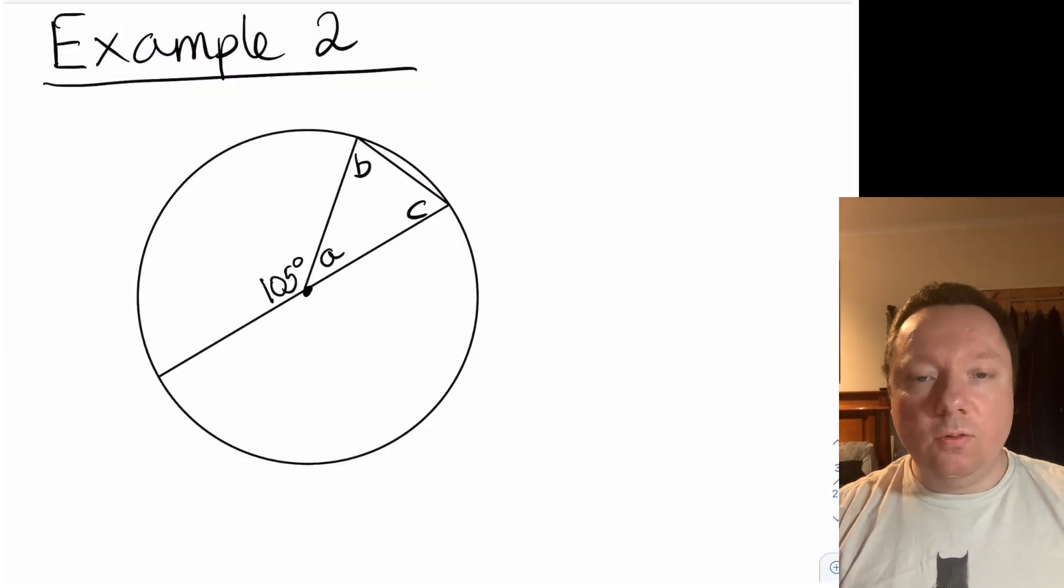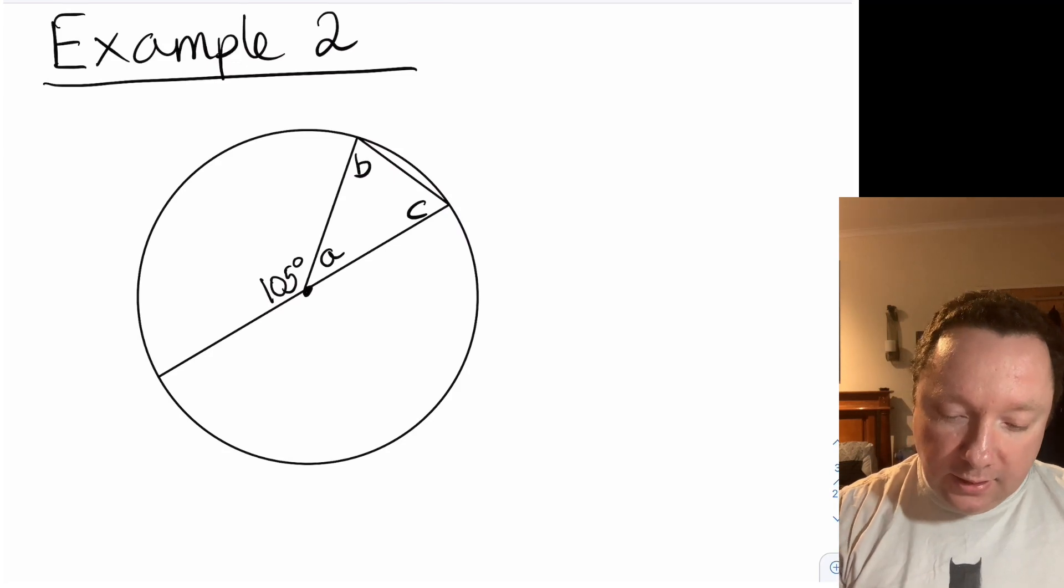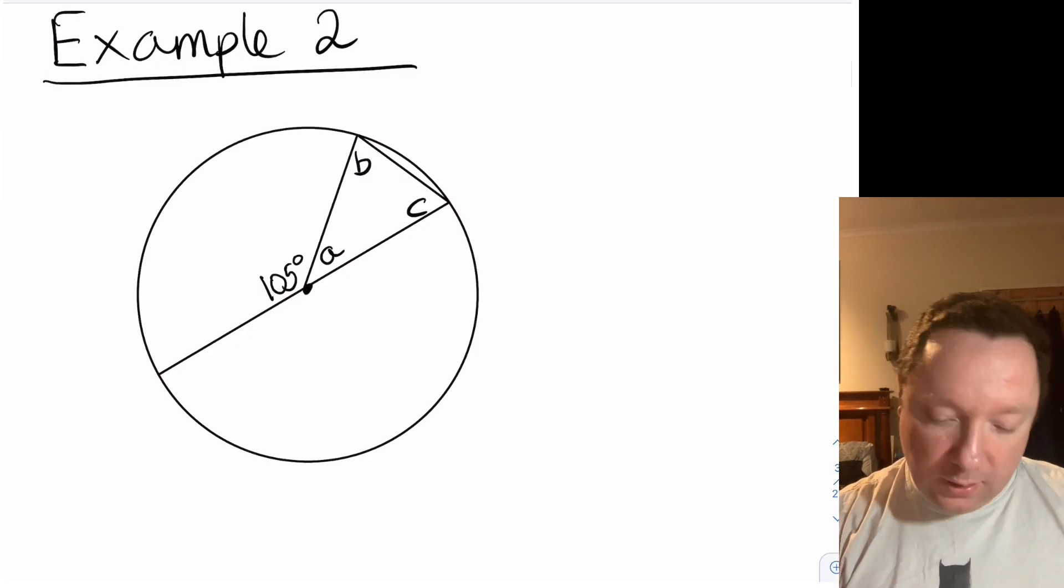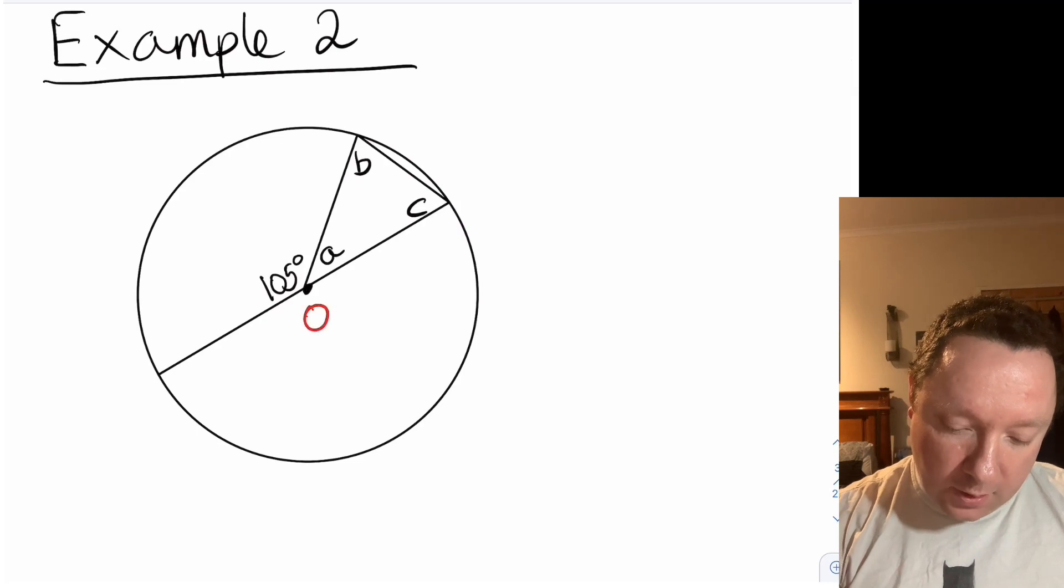Example two. We have to calculate the side angles a, b, and c. This time we've got a triangle and we've joined it into the diameter. So again the first thing we do is look for the lines that are going to be the same size.